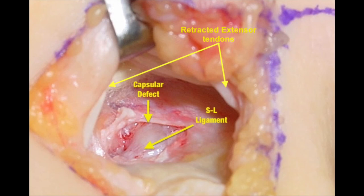Finally, this surgical image shows the scapholunate ligament. This ligament is the origin of the previously excised ganglion cyst. The capsular defect created by the excision of the ganglion stalk is also seen in the depths of the image. In addition, the retracted extensor tendons are shown.